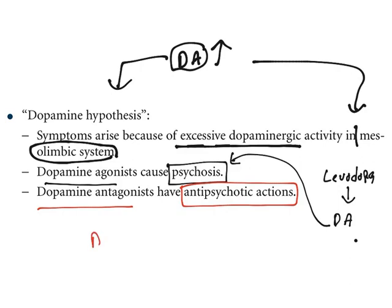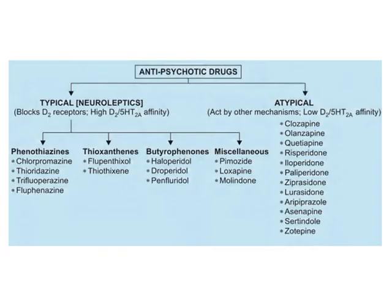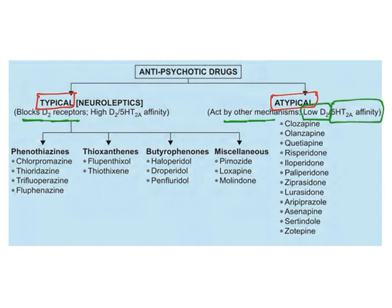Similarly, dopamine antagonists have antipsychotic action. Based on this theory, dopamine antagonists — especially dopamine D2 receptor antagonists — are used to treat psychosis. Antipsychotic drugs are classified into two major categories: typical and atypical. Typical drugs block D2 receptors, whereas atypical drugs act by other mechanisms, having low affinity for dopamine receptors but acting mostly on serotonin receptors.